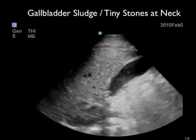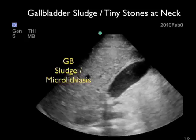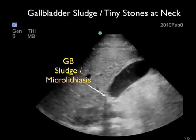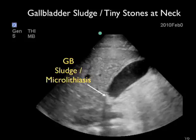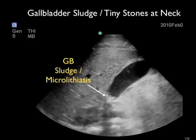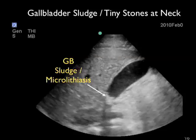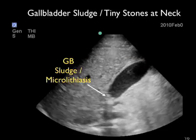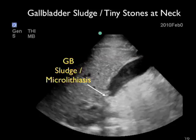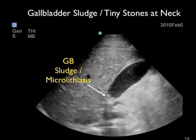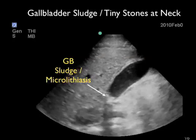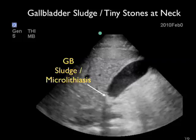Here's a video clip from a young male presenting with right upper quadrant pain. As we're looking through the gallbladder, we notice a finding within the neck of the gallbladder. We see a concretion of gallbladder sludge and also tiny gallbladder stones known as microlithiasis. Notice that the microlithiasis has posterior acoustic shadowing due to the blocking of sound waves through the concretions of cholesterol crystals — an interesting finding on the spectrum of gallbladder disease.